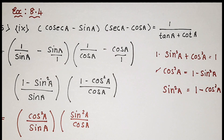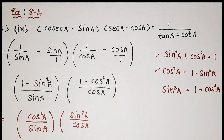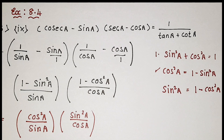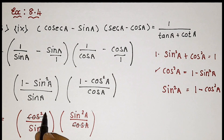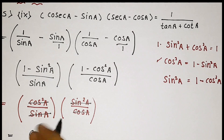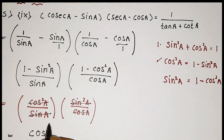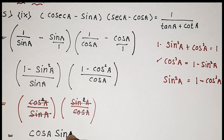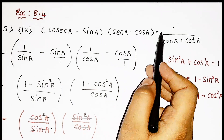When you look at it carefully, we can actually cancel. Here we have cos squared A and here we have cos A, so we can cancel one cos A. Similarly, here we have sin squared A and sin A, so we can cancel one sin A. After cancelling, since we had squares, we have one factor remaining in each. So we will get cos A into sin A.